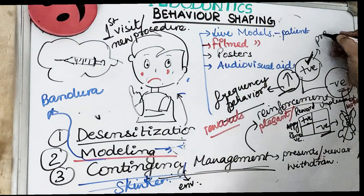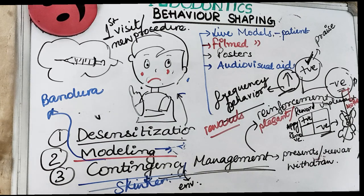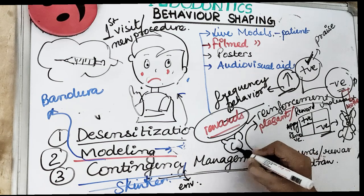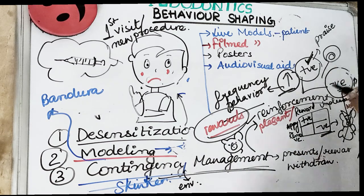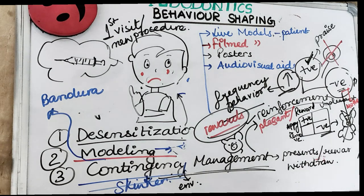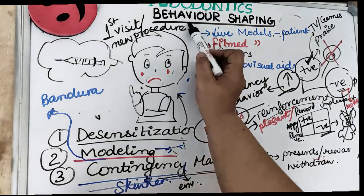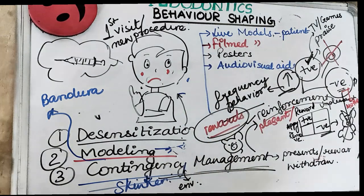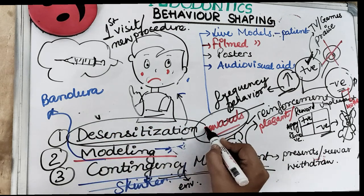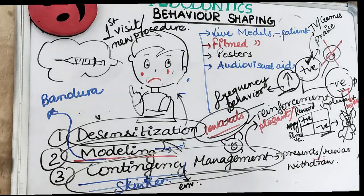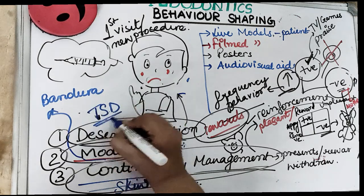We can also use praise — patting the child on the shoulder or back — as positive reinforcement. Rewards in the form of toys or games can be given, but sweets are usually not recommended since they cause caries, and as dentists we should not recommend them. We can also use TV shows or games as positive reinforcement. This is about behavior shaping, and we have studied three techniques: desensitization, modeling, and contingency management, as well as the Tell, Show, Do technique for desensitization.